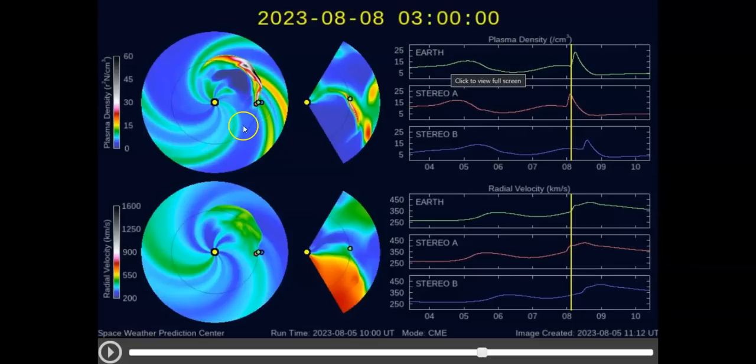In the green line is your plasma density, centimeter square. That's the thickness of the proton cloud that's in the CME. And here in this bottom chart, you have what's called radial velocity in kilometers per second. We call it solar wind speed. You're going to see this start to rise.